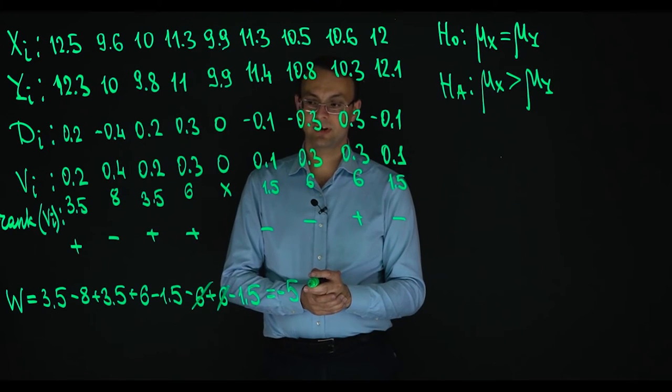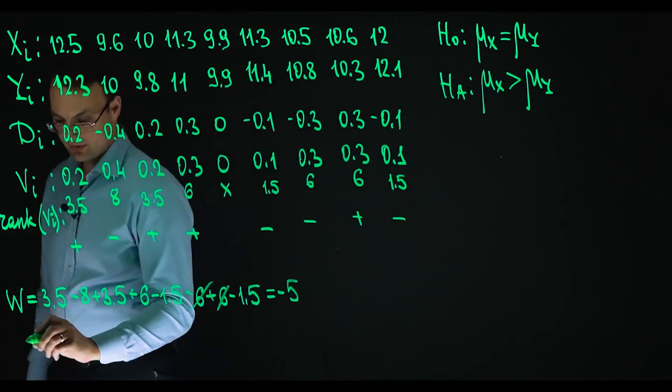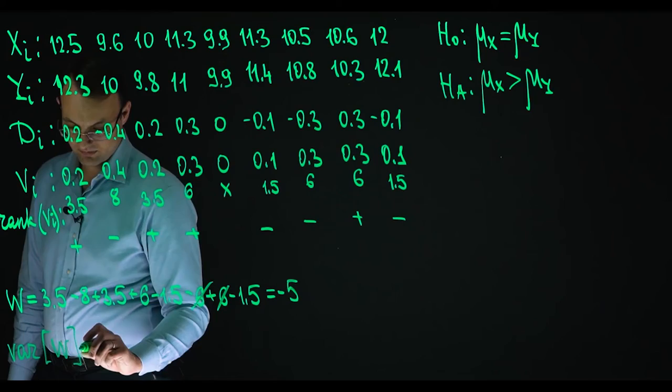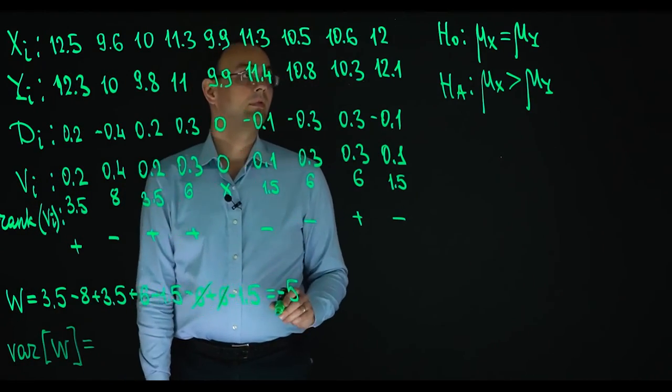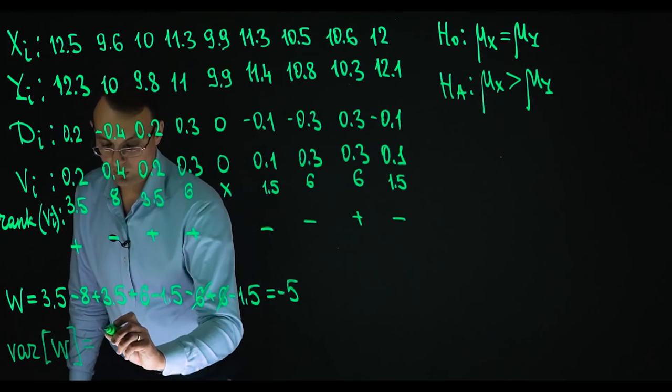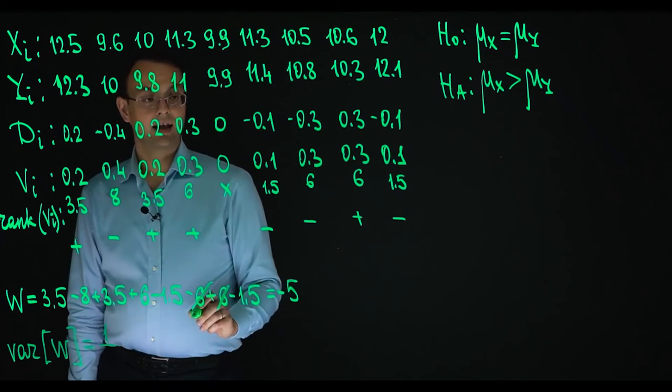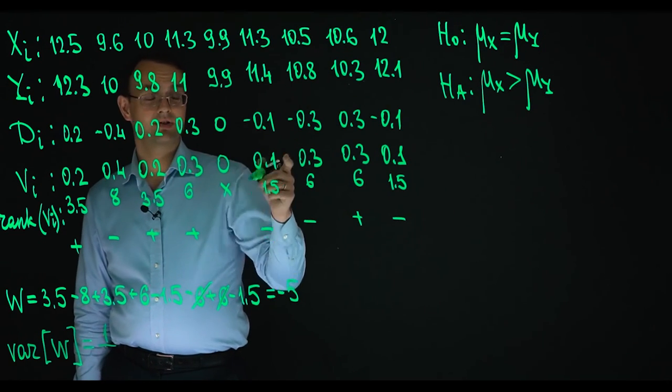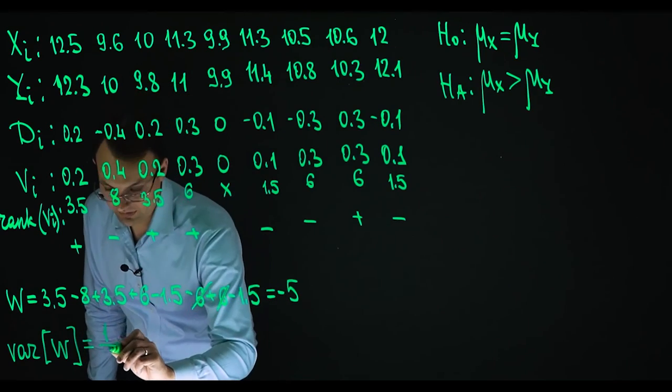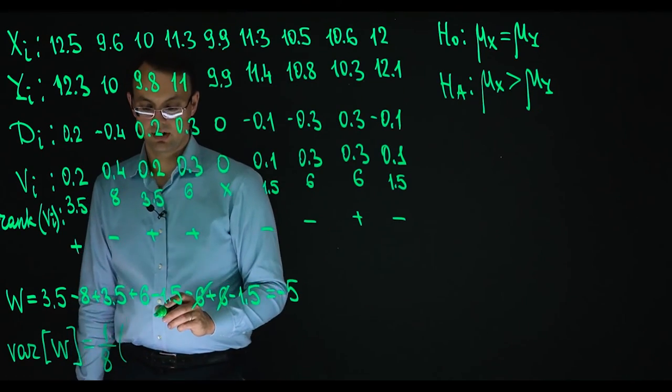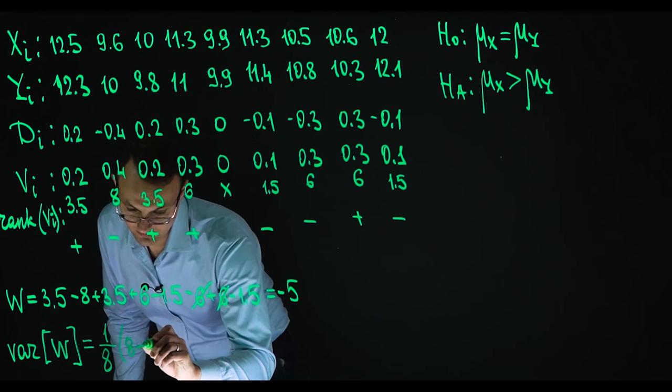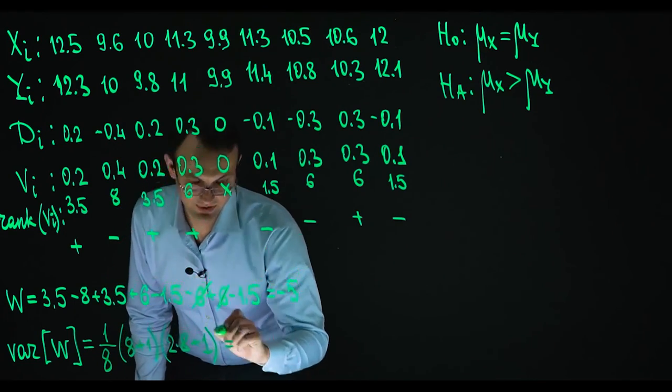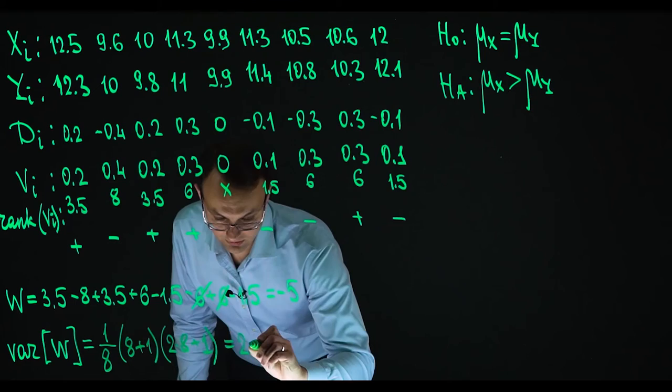So then we are to find variance. Variance of W according to the formula. So the variance is 1 over nr. nr is number of differences that are not equal to 0. So 1 over 8 times 8 plus 1 times 2 times 8 plus 1. And so this is equal to 204.